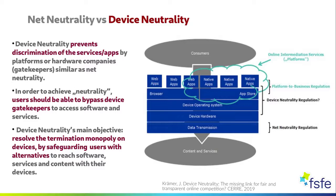Similarly to what net neutrality imposes on ISPs, device neutrality aims to prevent discrimination of services or apps by platforms or hardware companies exercising gatekeeper control. Therefore, end users should be able to bypass device gatekeepers to access third-party software and services. Device neutrality is understood as a policy term whose main goals are resolving termination monopoly on devices and safeguarding users with alternatives to reach software and content within their devices.